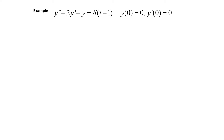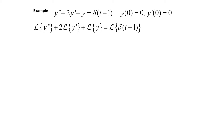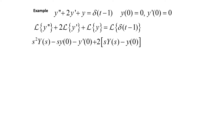For another example, we have y double prime plus 2y prime plus y equals the Dirac delta of t minus 1, with initial conditions y(0) equals 0 and y'(0) equals 0. We'll start by taking the Laplace transform of all terms: the Laplace transform of y double prime, plus 2 times the Laplace transform of y prime, plus the Laplace transform of y, equals the Laplace transform of the Dirac delta function at t minus 1. This gives us s squared·Y(s) minus s·y(0) minus y'(0), plus 2 times (s·Y(s) minus y(0)), plus Y(s), equals e to the negative s.